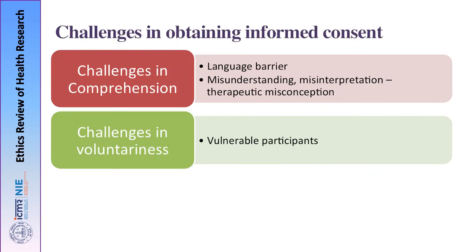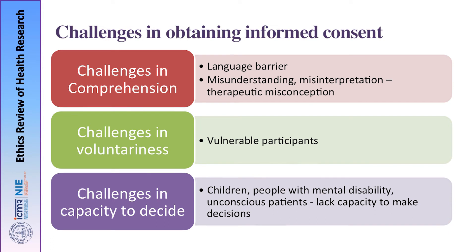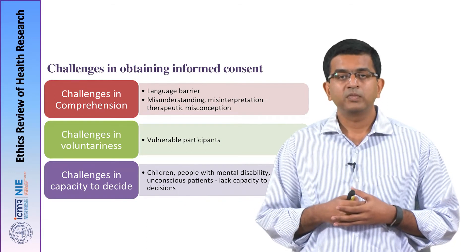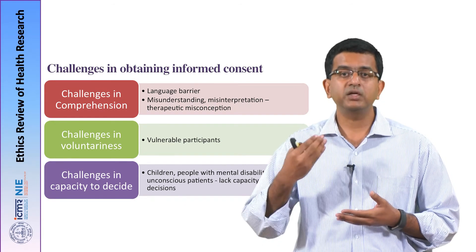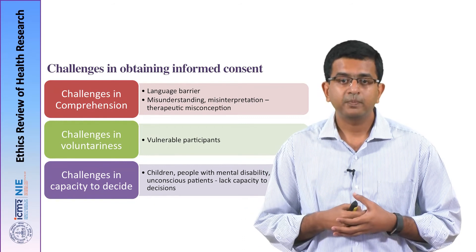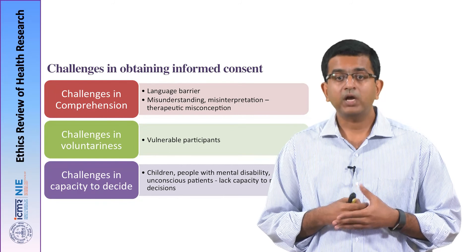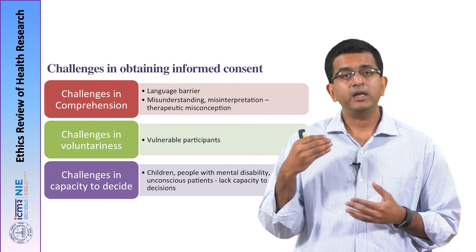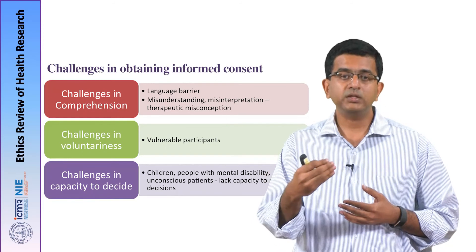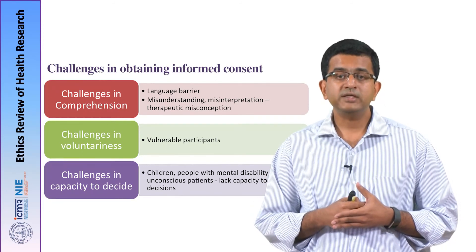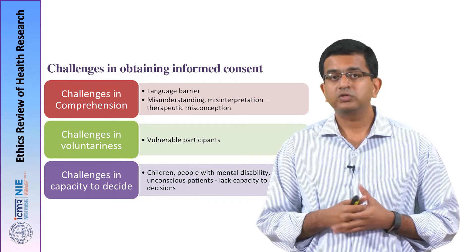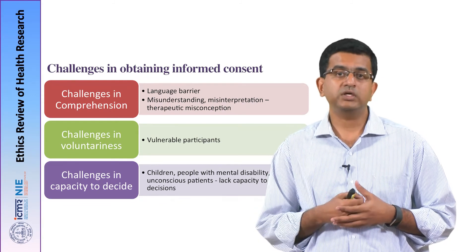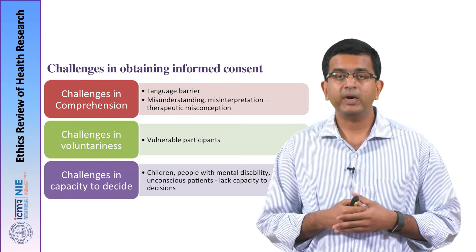The third category is challenges in capacity to make a decision. This applies to minors and children who lack the capacity to fully discern various aspects of the study, people with mental disabilities, and unconscious patients who lack the capacity to make a choice. For these individuals, legally acceptable representatives make the decision on their behalf. These challenges need to be addressed consciously in any research proposal and evaluated by an ethics committee.